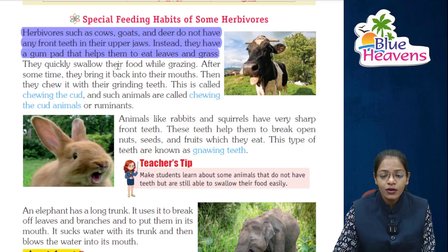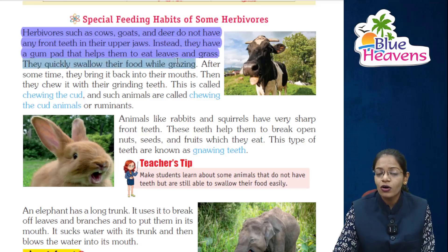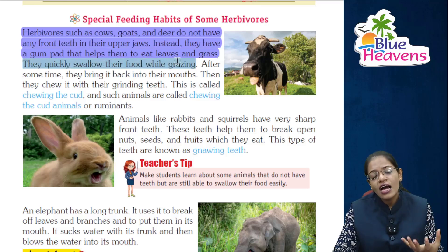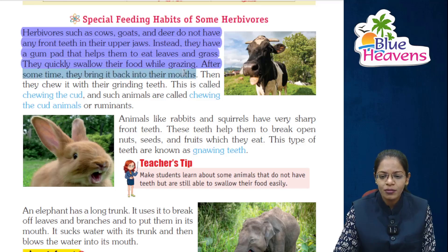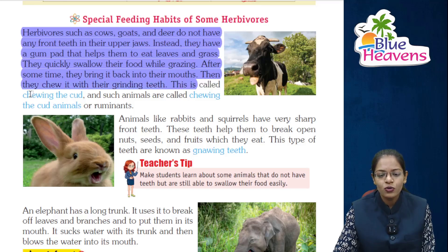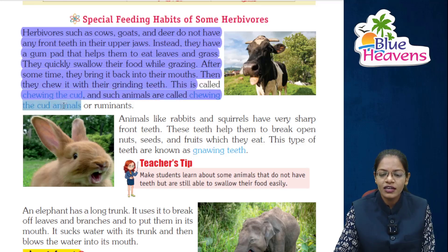Herbivore animals swallow all their food at once. After some time, they bring it back into their mouth. Then they chew it with their grinding teeth. This is called chewing the cud, and such animals are called cud-chewing animals or ruminants.